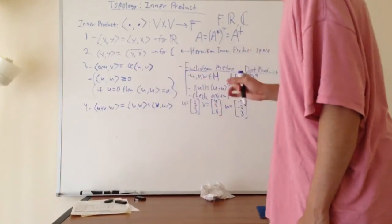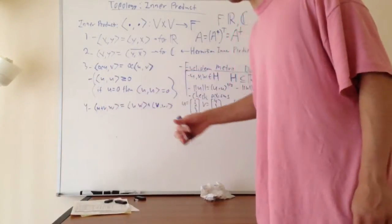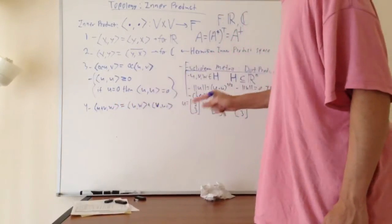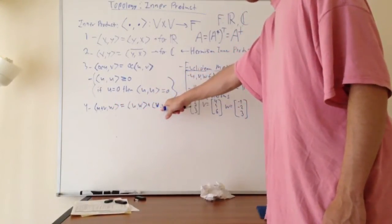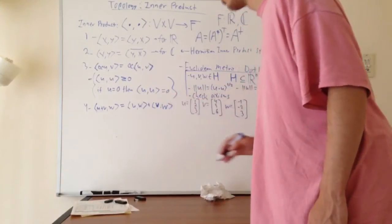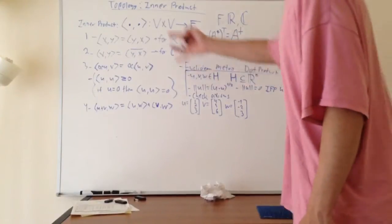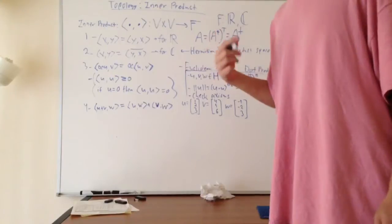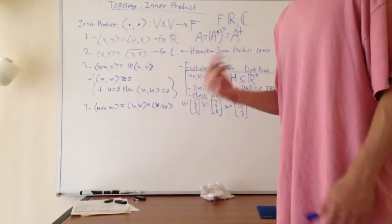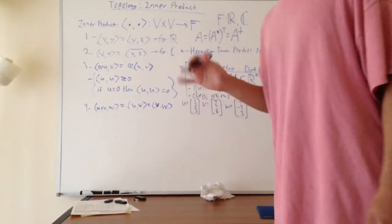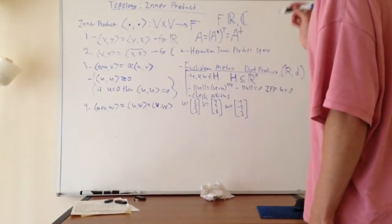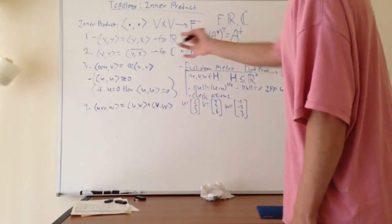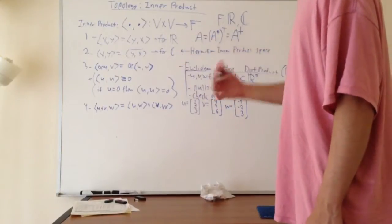The fourth axiom: if we have three vectors and do the inner product of U plus V with W, that's the same as the inner product of U with W plus the inner product of V with W. Any time we're dealing with vectors and these conditions hold, it's an inner product. If we're dealing with a metric space that also has an inner product, we're dealing with a Hilbert space, which I talked about in the previous video. Hilbert spaces are vector spaces which have an inner product defined on them.